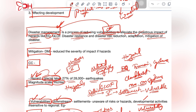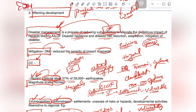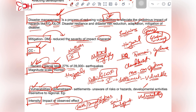Mitigation in climate change means reducing emissions or reducing the outflow of gases with high global warming potential, thereby reducing the impact of climate change. So you need to look at the context of mitigation carefully — whether it's from disaster management or climate change.